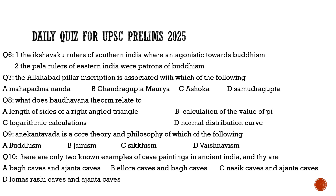Question ten, the last question: There are only two known examples of cave paintings in ancient India related to the Gupta period. What are those? The options are: Bagh Caves and Ajanta Caves; Ellora Caves and Bagh Caves; Nasik Caves and Ajanta Caves; or Ellora Caves and Bagh Caves. Nasik caves and Ellora caves are eliminated. The correct answer is option A: Bagh Caves and Ajanta Caves.